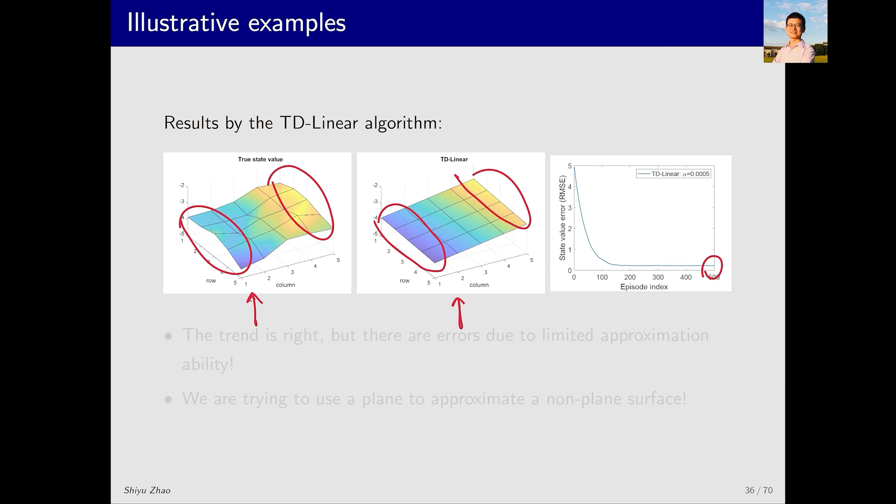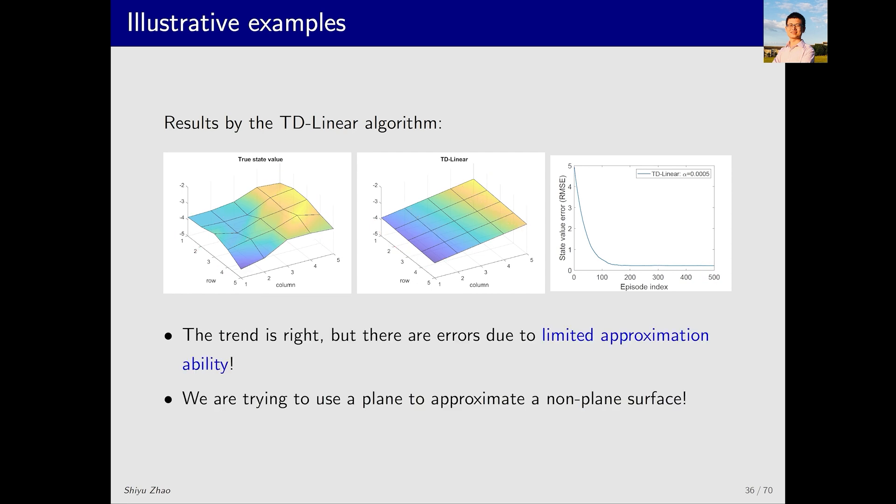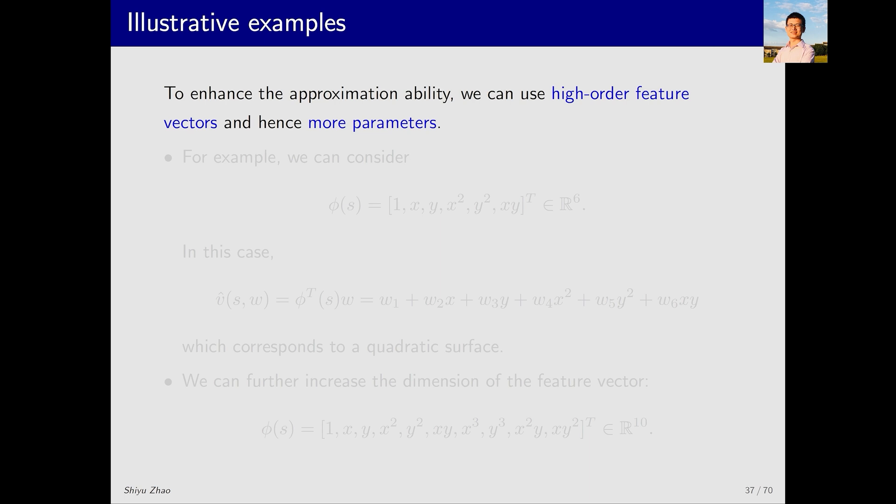It's quite simple. The surface of the true state value is complex, but now I want to use a plane to fit it. How is that possible? It's impossible to achieve a perfect fit. This is exactly what I mentioned earlier. If we want to fit it well, we can't use a simple plane. We need to use a more complex higher order surface. The corresponding feature vector will also need to be of higher order and have more parameters. Now let's see if we can do this.